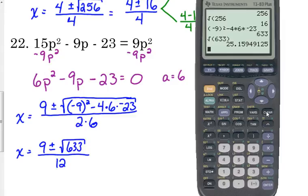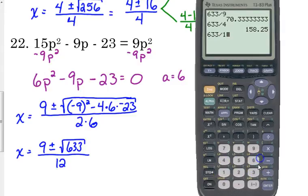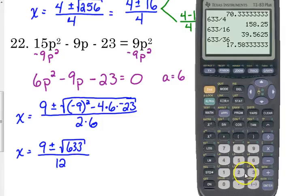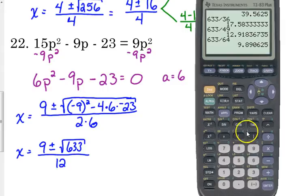Let's try to reduce the radical by simplifying. We want to see if 633 is divisible by a perfect square. Trying 9 — no. Trying 4 — no. 25, 36, 49, 64 — none of them work. When I start getting to these bigger perfect squares and the quotients get smaller, I can tell it's not going to work. So 633 is not divisible by any perfect square.